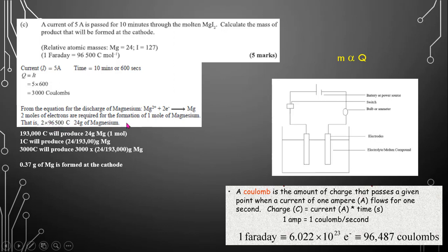And that will produce one mole of magnesium or 24 grams. So 2 times 96,500, that's two moles of electrons. That will be equal to 193,000 coulombs. This charge will produce one mole or 24 grams of magnesium.